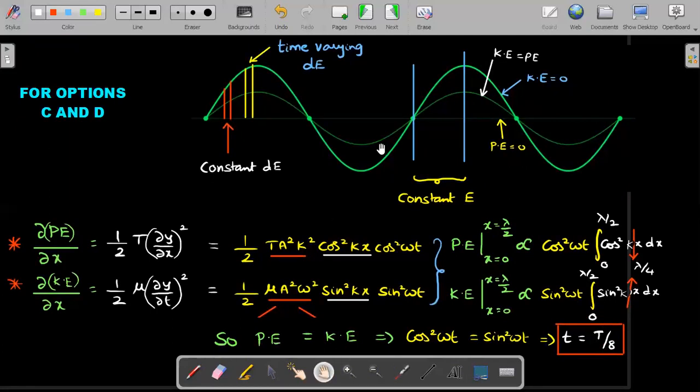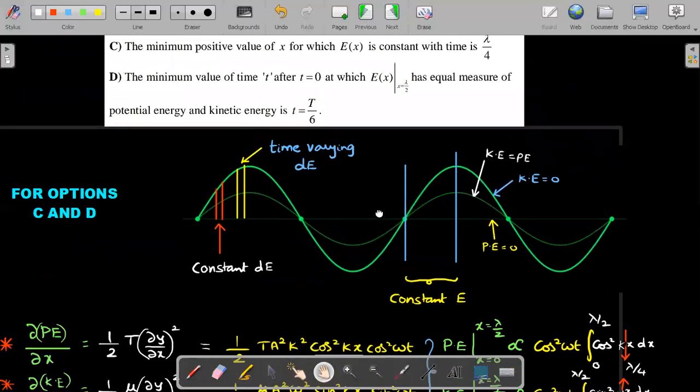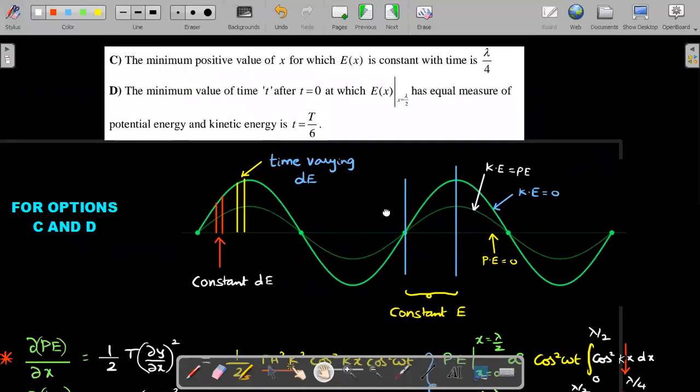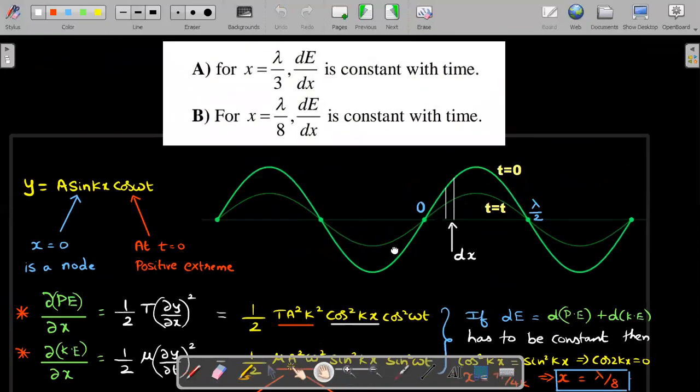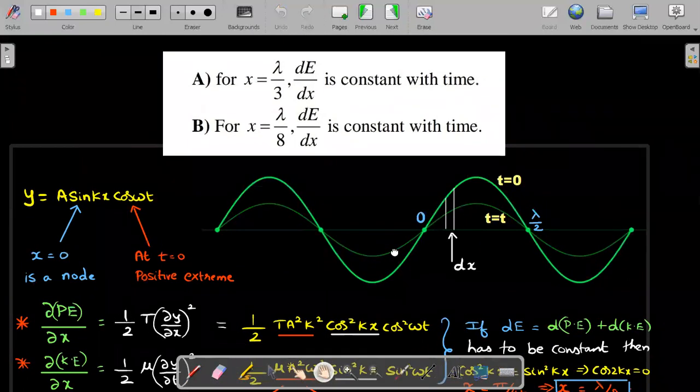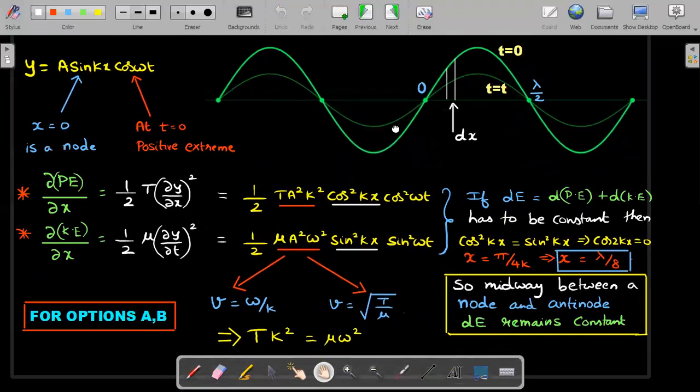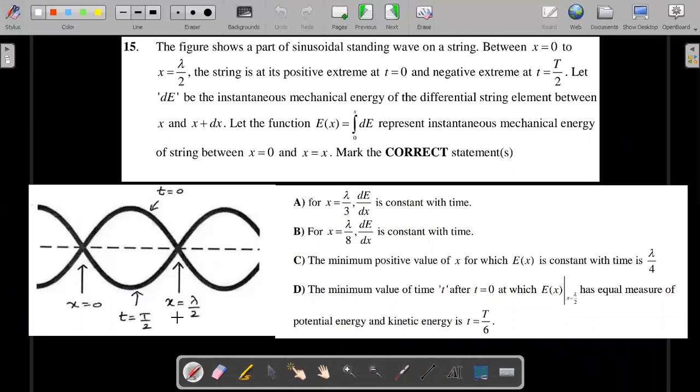We're getting t by eight. The last option was wrong—he gave T by six, whereas C option was right. Among A and B, we saw in the previous question it's the lambda by eight position where dE remains constant. Going back to the original question, we mark correct answers as lambda by eight and lambda by four. For D, answer should be T by eight.